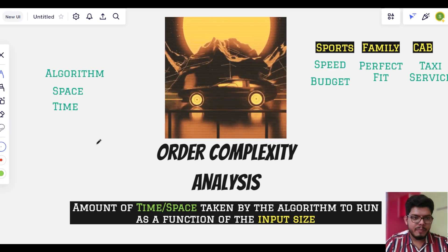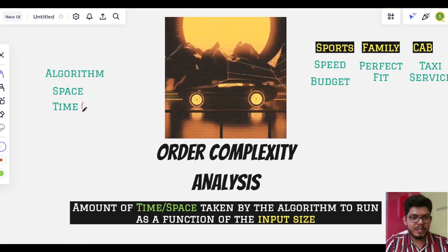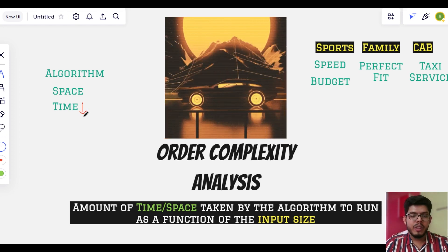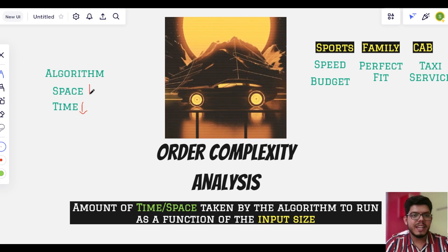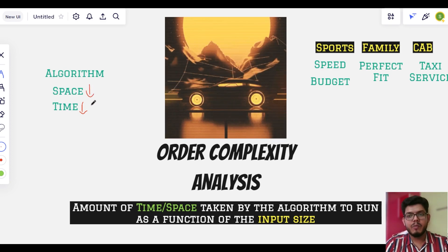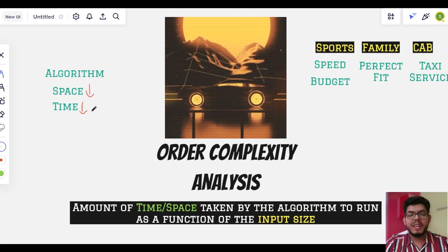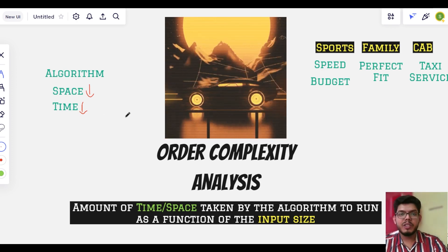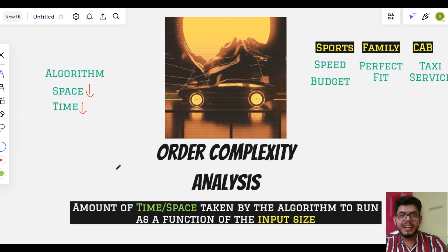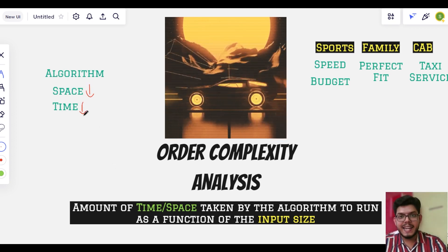So we will compare which algorithm is better in terms of space and time. Now for a majority of the problems time is our first priority - that is we need to reduce the time taken by the algorithm to run. And then comes our second priority that is space. But there will be some problems where space is the priority and time may not be the priority. Depending on the problem statement given to us we will try to find the trade-off between space and time.